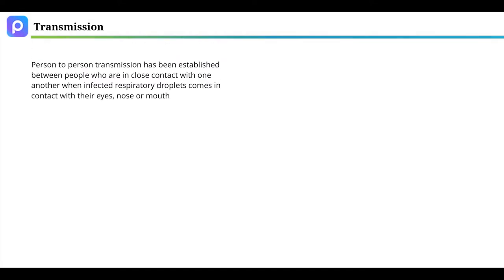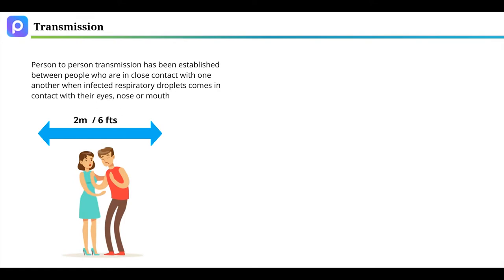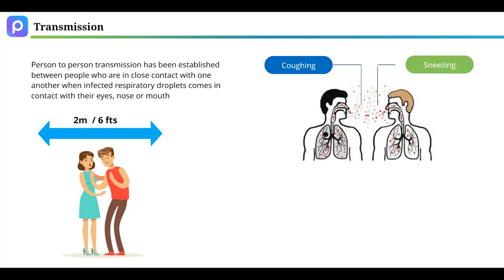Person-to-person transmission has been established between people who are in close contact with one another within 2 meters or 6 feet. When infected respiratory droplets produced via coughing, sneezing, and talking come in contact with their eyes, nose, or mouth.